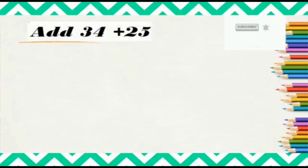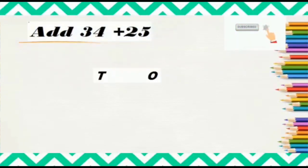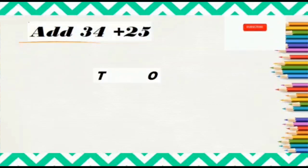Look at an example here. Here we need to add 34 plus 25. As there are two digits, we know their place value, that is 1s and 10s. So first we will write 1s and 10s and arrange these numbers according to their place value. In 34, there are 3 tens and 4 ones, so we will write 3 under the 10s column and 4 under the 1s column.